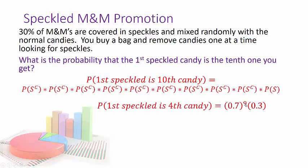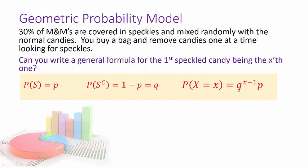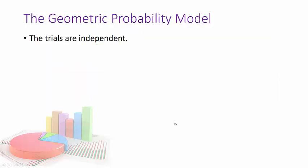It would look like 0.7 to the ninth times 0.3. You could skip straight to this because you know you'll have nine failures and success on the tenth try. That leads us to the geometric probability model. We use P for the probability of success, Q = 1 − P for the probability of failure, and the formula is Q^(X−1) × P, where the success occurs on that last attempt.